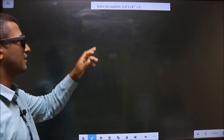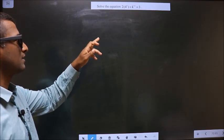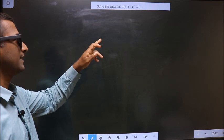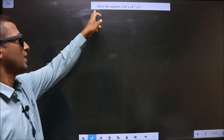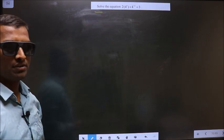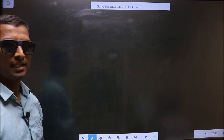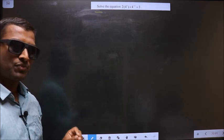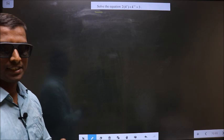Solve the equation 2 times 4^x plus 4^(-x) equals 3. Here they told you to solve, means you should find the value of x. First, the given equation is...